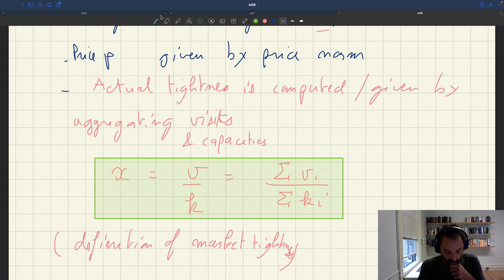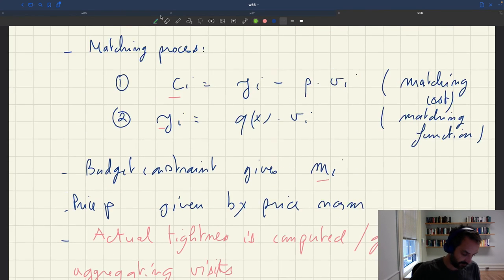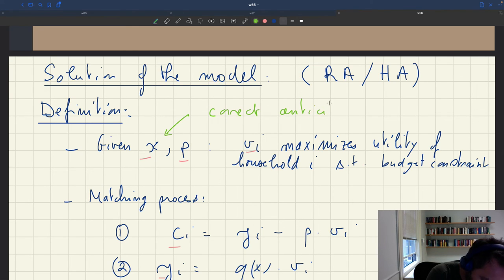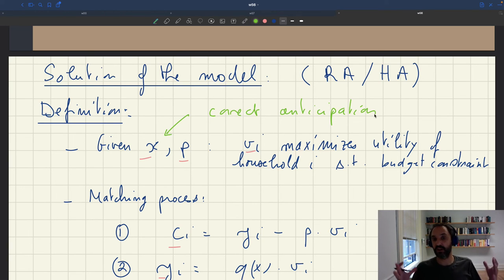So, households anticipate a certain tightness. And here, of course, when we solve the model, we want households - when they're making their decision - we want, of course, households to have a correct anticipation of what's going to happen. Because if they anticipate a wrong tightness, they're going to make decisions that once the tightness is realized would be suboptimal.